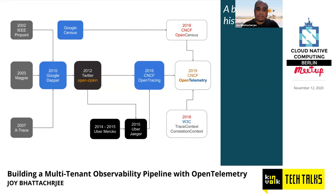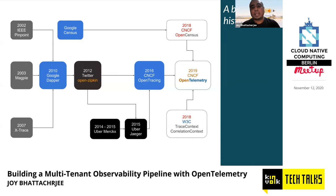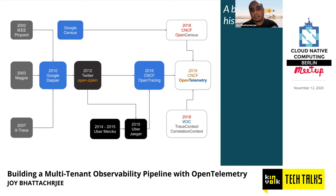Down the line, Uber also started doing something similar. They had an internal tracing system called Merci/Cakes. They adopted OpenZipkin's principles — even initially using the Zipkin UI and certain components — and married their internal concepts with OpenZipkin to create Jaeger, which is probably the most popular tracing solution we've seen in recent times.